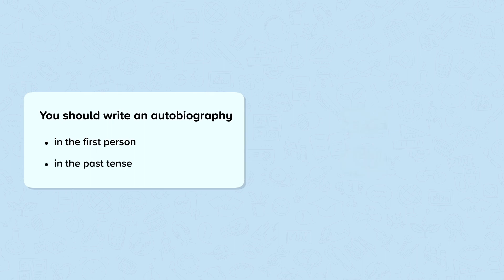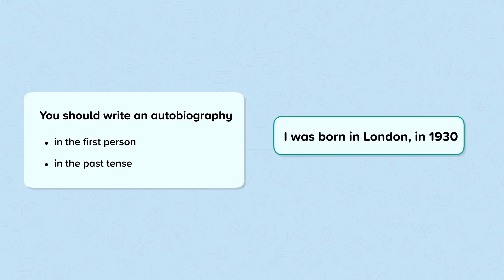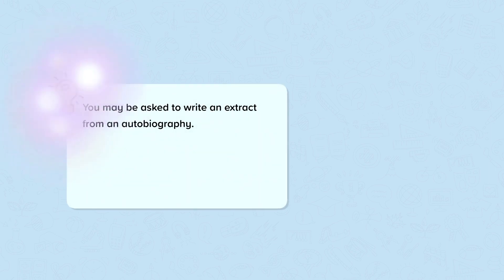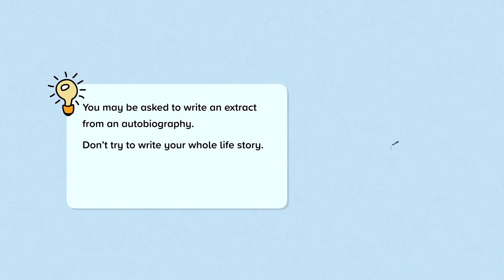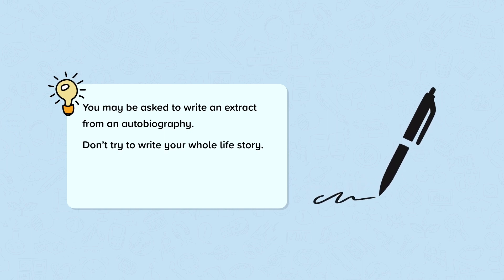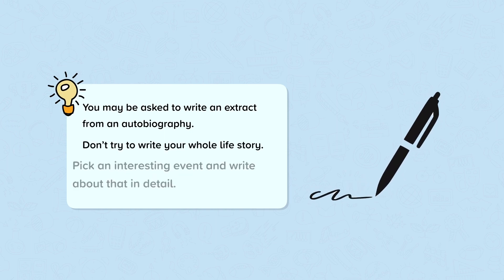For instance, you might write: I was born in London in 1930. You may be asked to write an extract from an autobiography. If you are, don't try to write your whole life story. Pick an interesting event and write about that in detail.